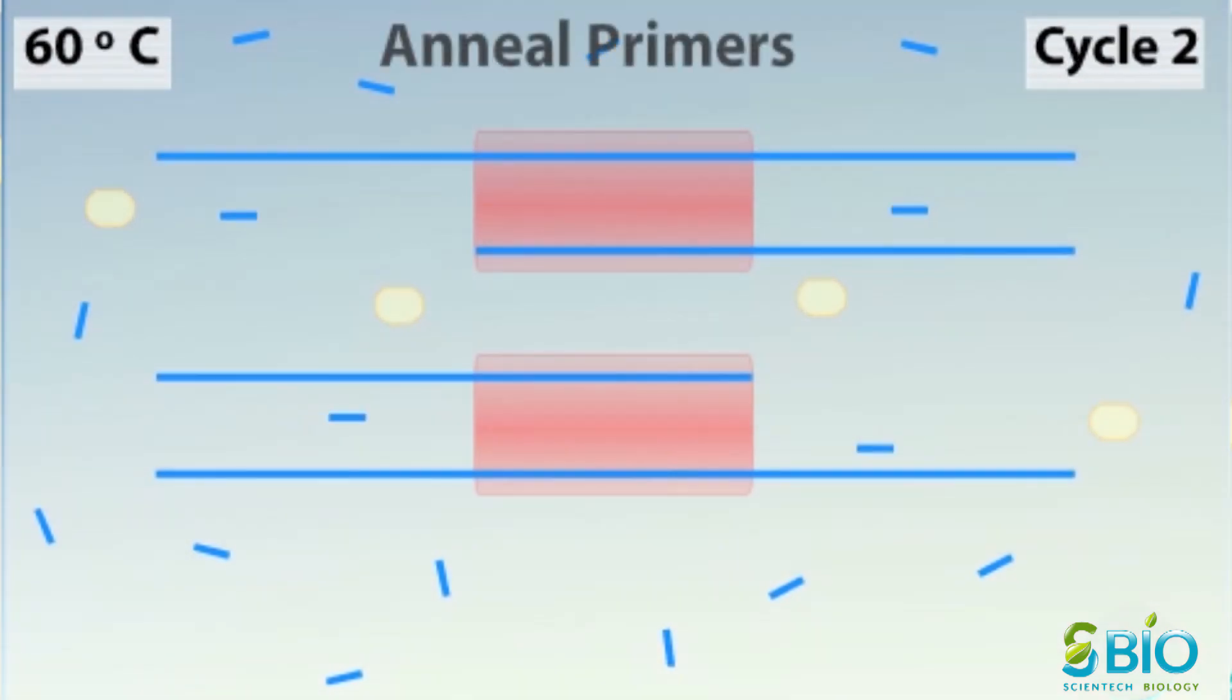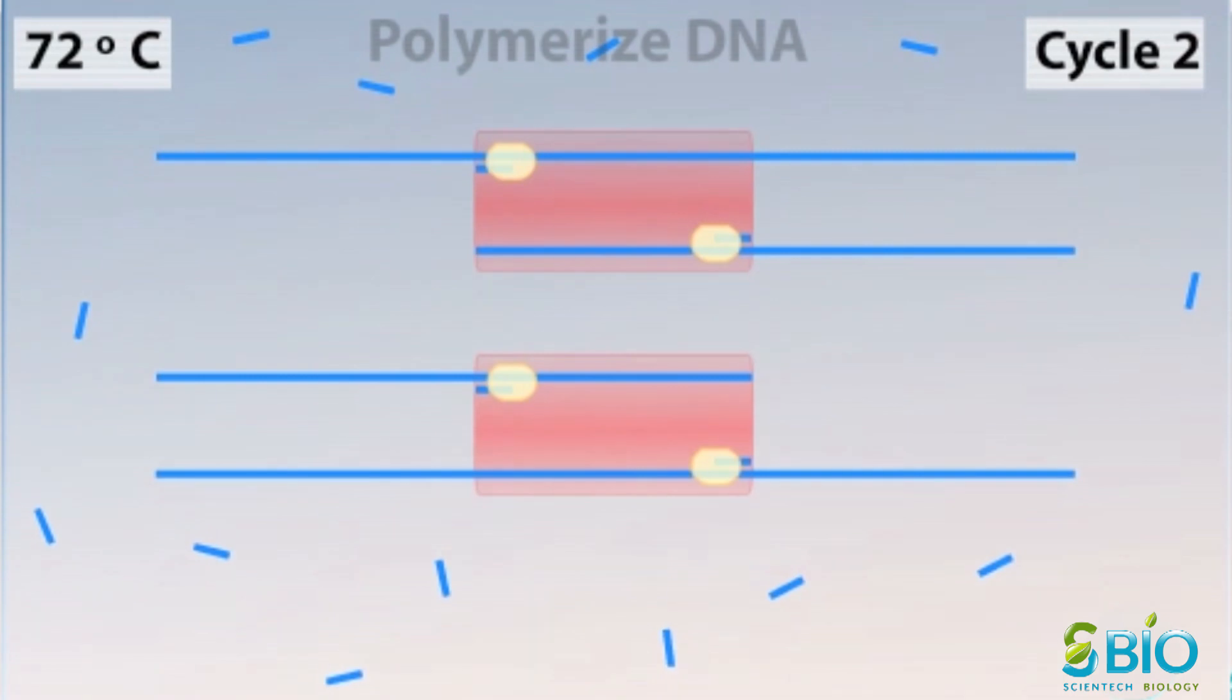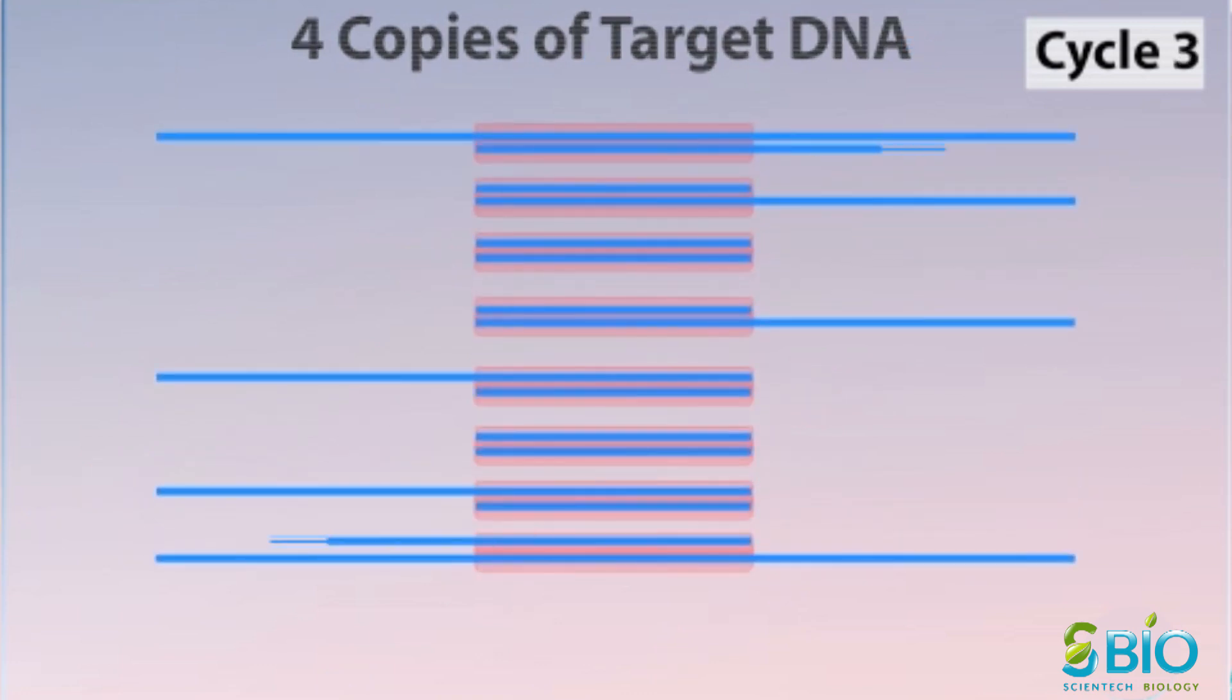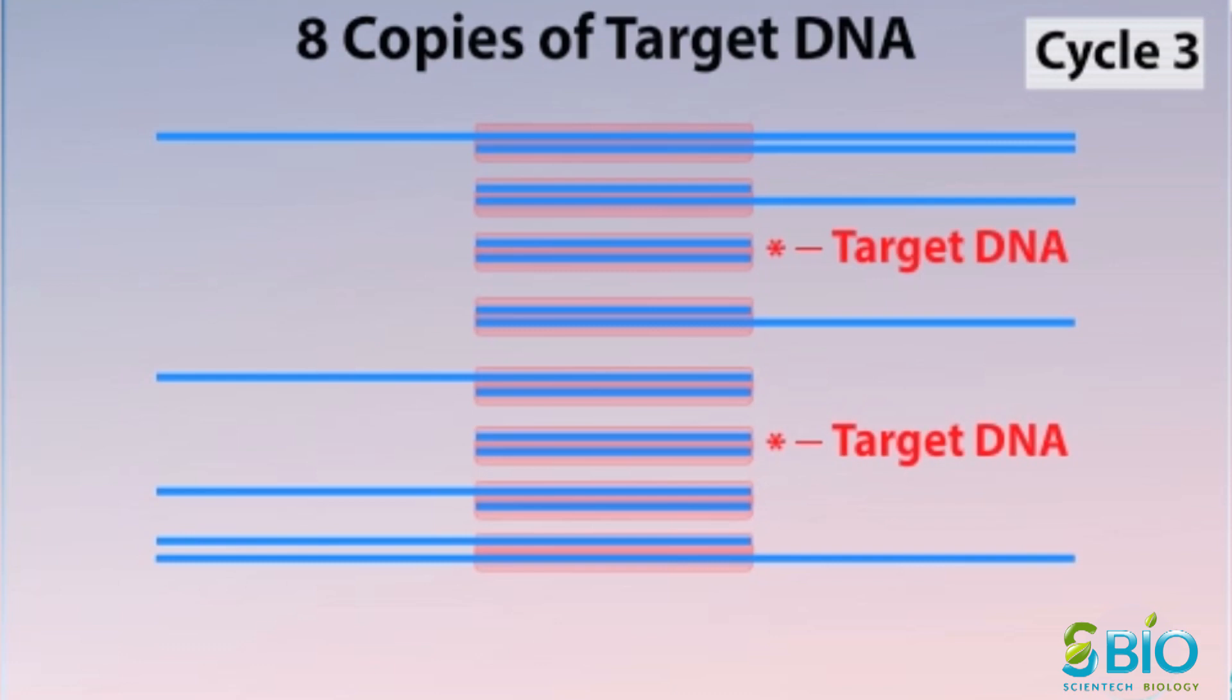The PCR reaction mixture contains many copies of the primer and an abundant supply of nucleotides to perform many additional cycles. After a second cycle, there are four copies of the target DNA. After cycle 3 is finished, there are eight copies of the double-stranded target DNA sequence.